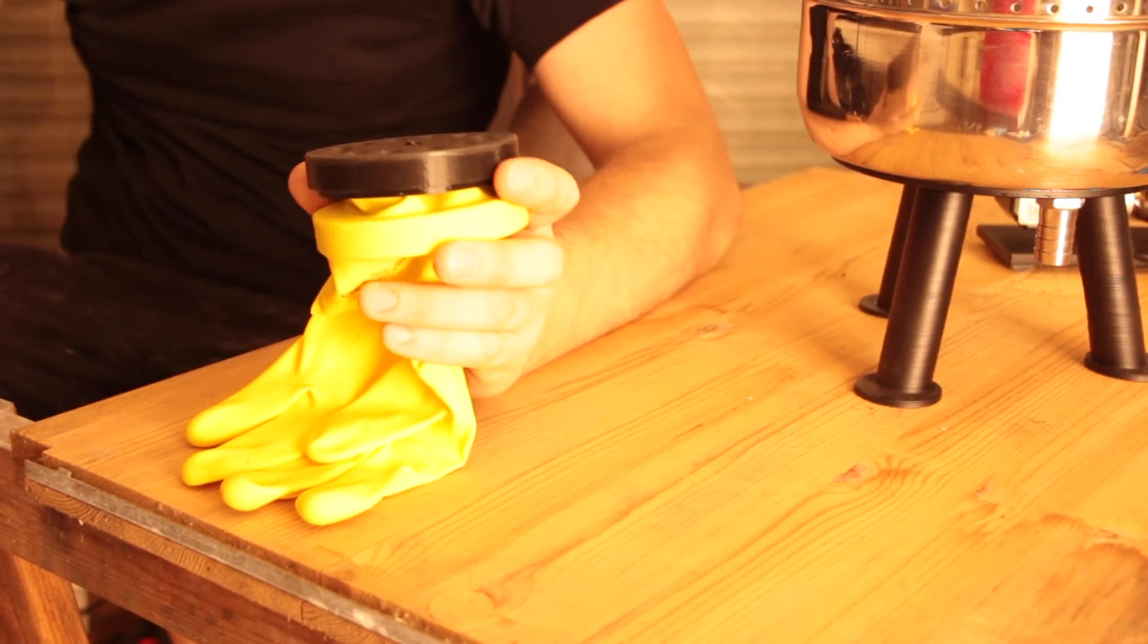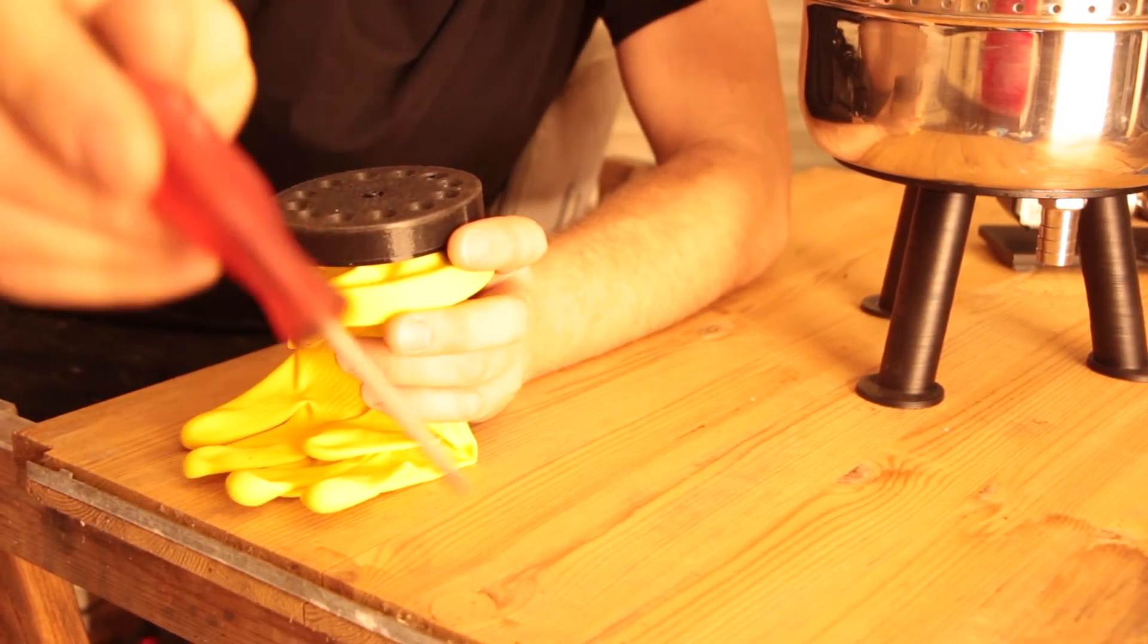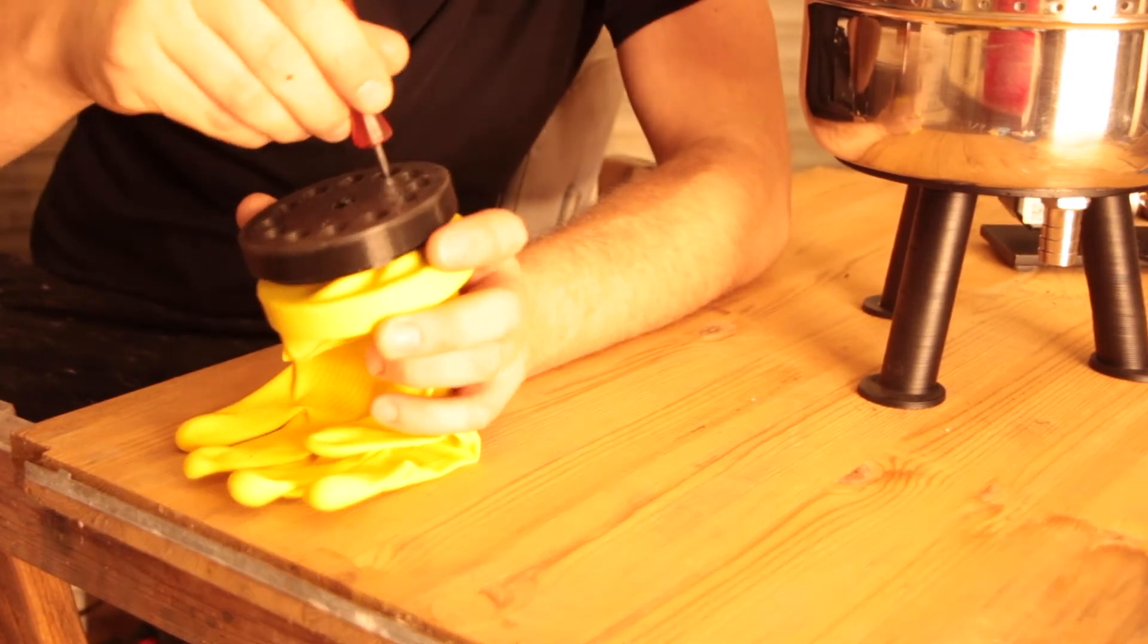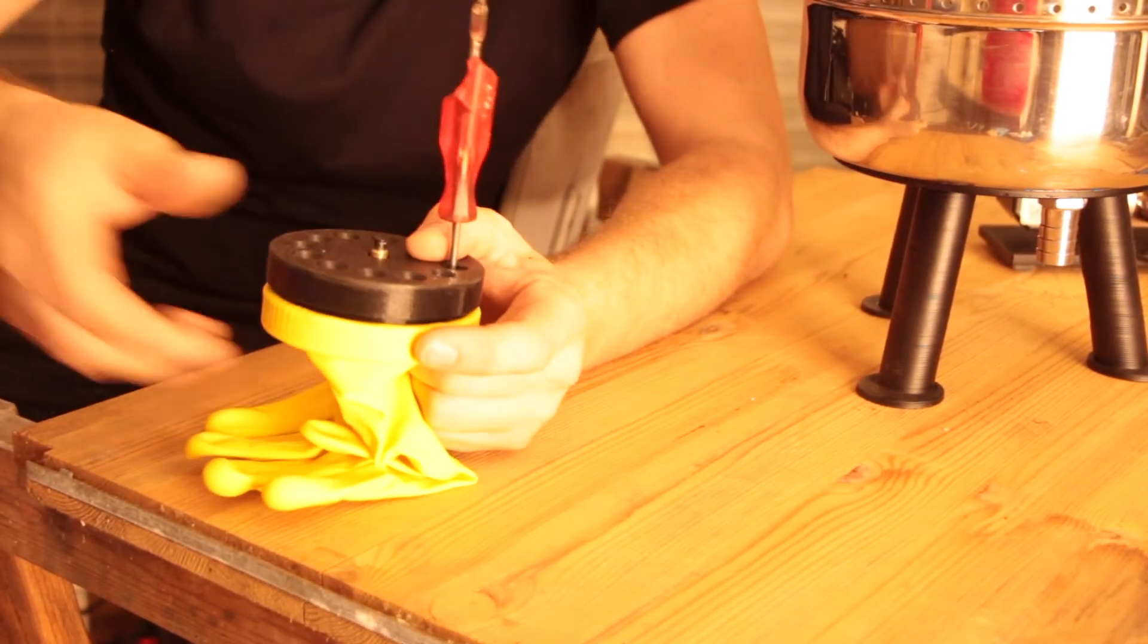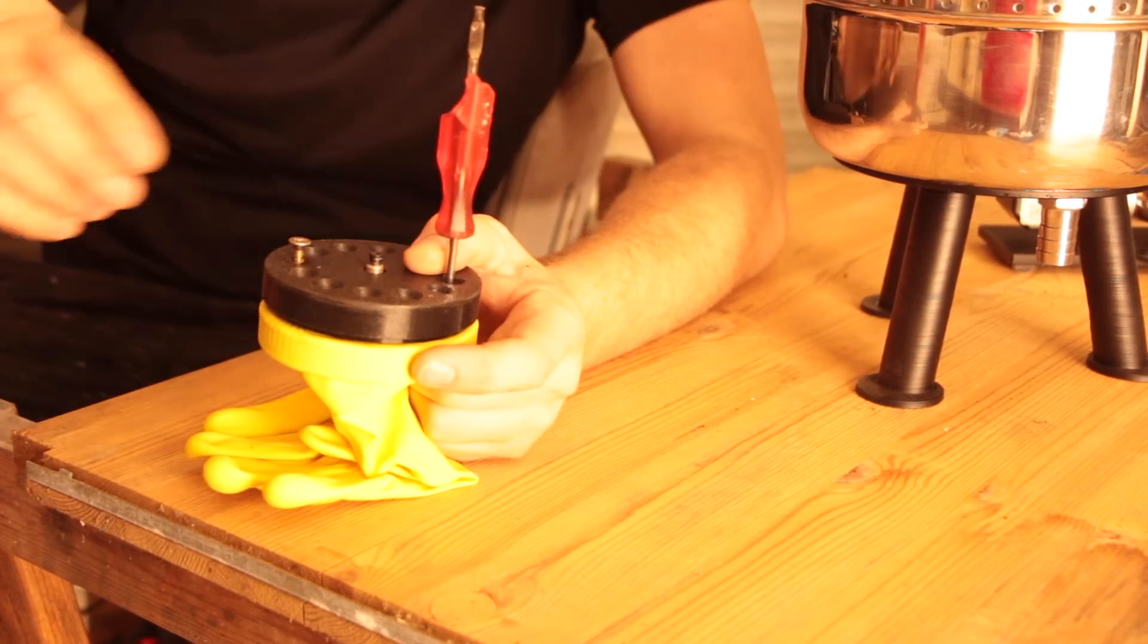If you need some help to align, just take something where you can push through, then you go and align, then you push down. After you push it down, you take some screws and put them in.